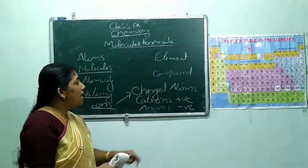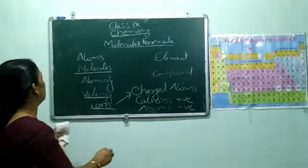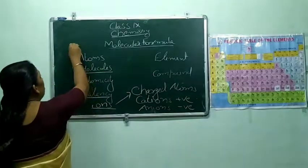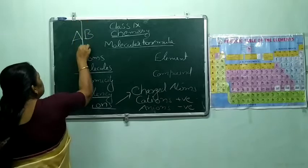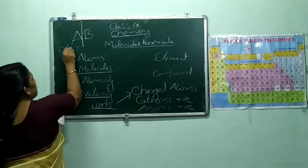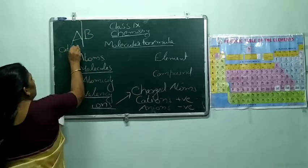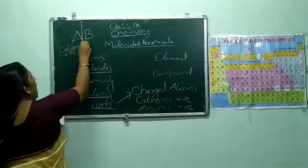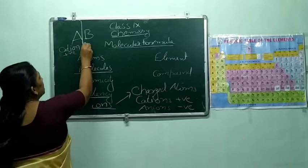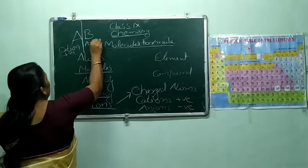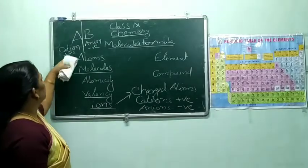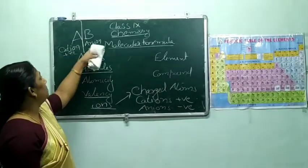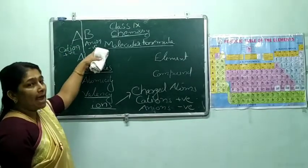While writing a molecular formula of the form AB, the A part will be the cation — that is positive — and the B part will be the anion — that is negatively charged. The A part will be cation and B part will be anion.